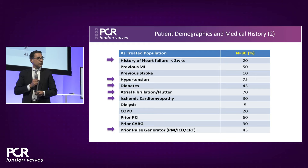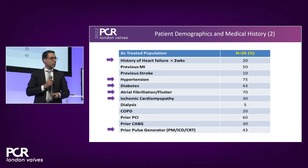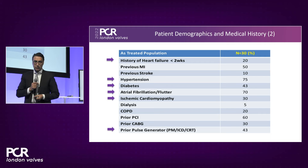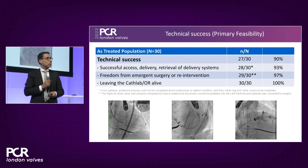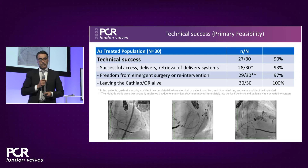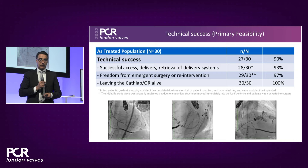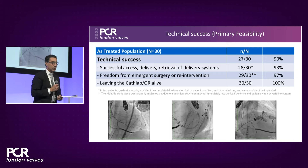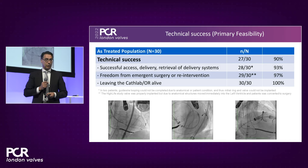Coming to the primary feasibility endpoint, the technical success rate for implantation was 90% in the first 30 patients. Successful access, delivery, and retrieval of the delivery system was accomplished in 28 of the 30 patients. In two patients, the wire looping failed. Freedom from emergent surgery or re-intervention on the mitral side occurred in 29 of the 30 patients.